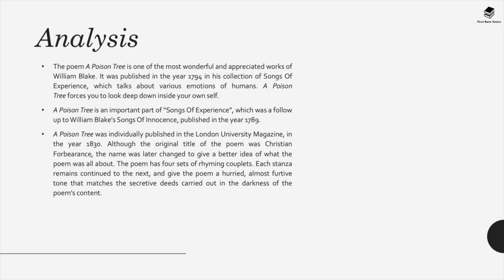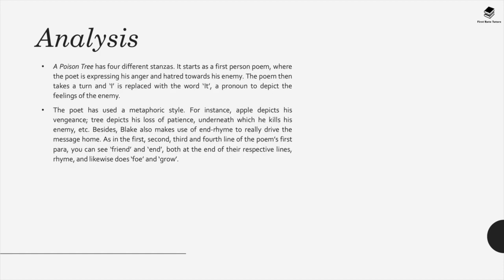A Poison Tree is one of Blake's most appreciated works. It's part of a wider anthology called Songs of Experience, a follow-on from Songs of Innocence, published in 1789. The poem has four stanzas and starts as a first-person poem where the poet expresses his anger and hatred towards his enemy. The pronoun 'I' is then replaced with 'it' to depict the feelings of the enemy.